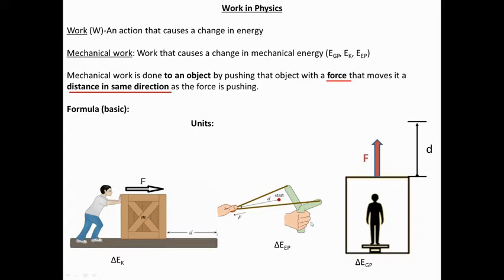With this slingshot, the person is pulling back, so they exerted a force and put that force through a distance, causing a change in elastic potential energy. And then with the elevator rising up, there's a force pushing it up and it moves the distance in the same direction, so it gains gravitational potential energy.